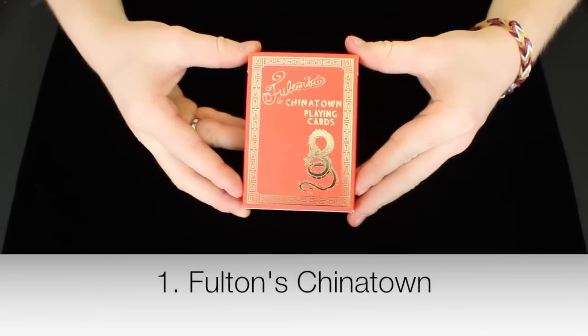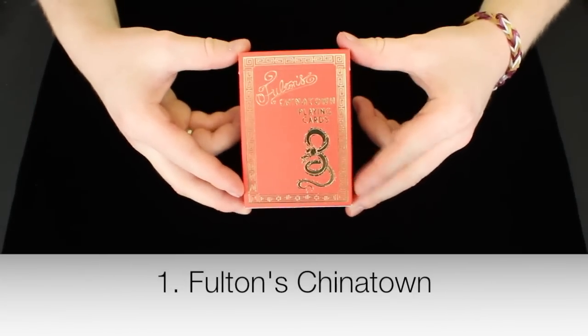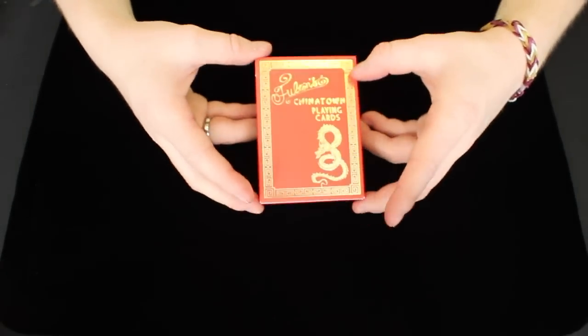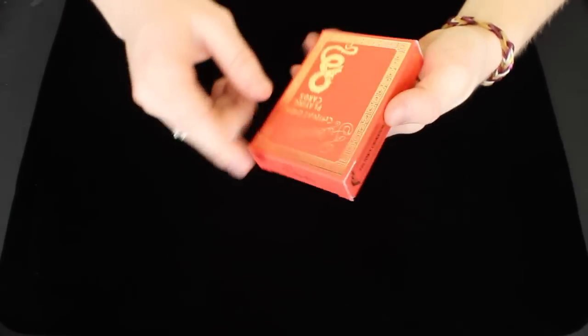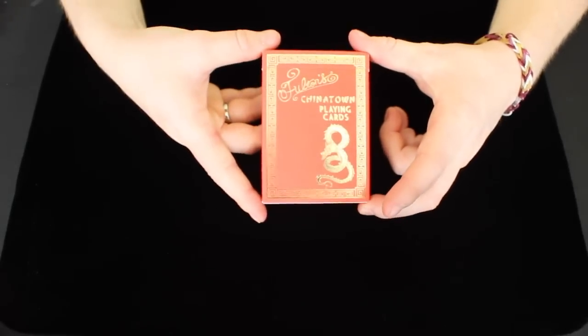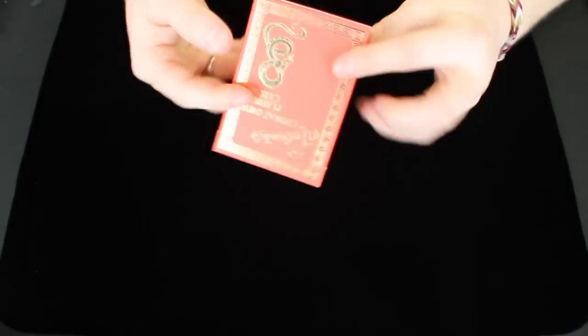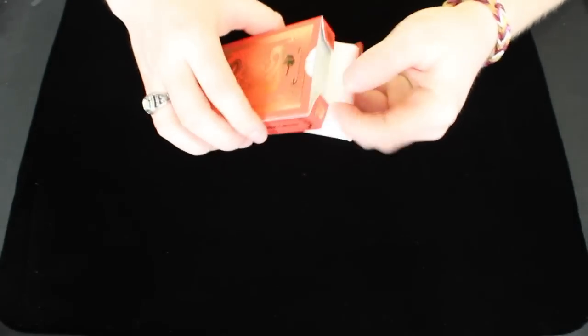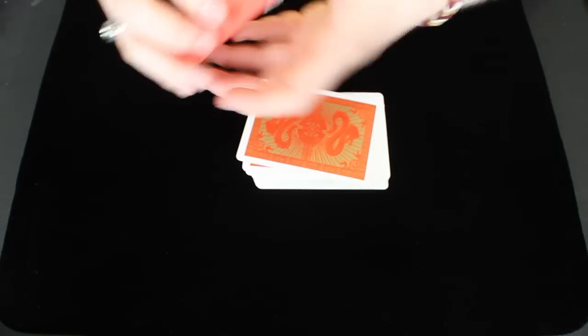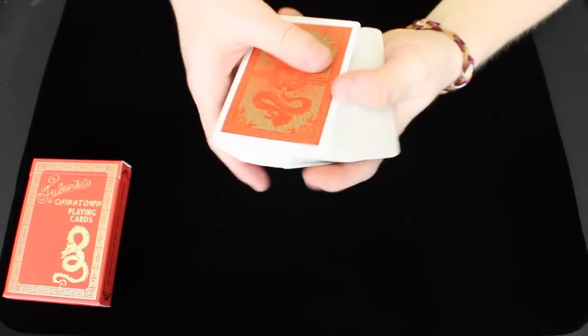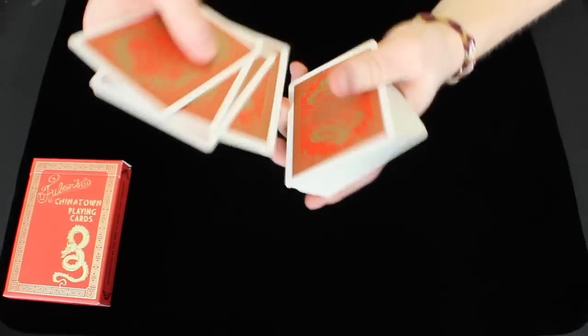At number 1, we have the Fulton's Chinatown playing cards from Dan and Dave. This is my all-time favorite deck because I think it is one of the coolest Fulton cards that they have designed. And it is also the best handling deck in my collection. The Tuck Box itself is exquisite with lots of gold foil on it, but the cards on the inside are awesome as well. They have dragons on them. They're designed very cool by Brad Fulton.